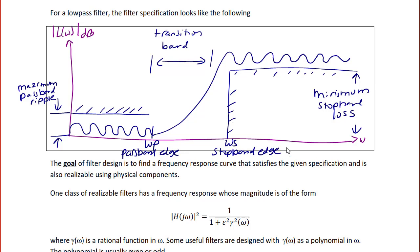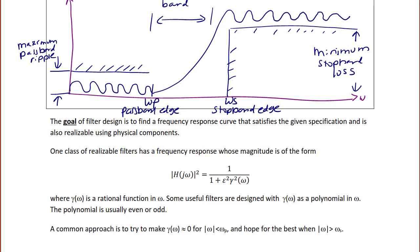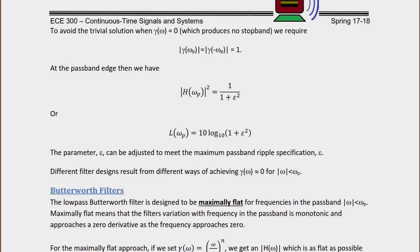The goal of filter design is to find a frequency response curve that satisfies the given specifications and is realizable using physical components. One class of realizable filters has a frequency response of the form |H(jω)|² = 1 / (1 + ε²γ²(ω)), where γ(ω) is a rational function in ω. Some useful filters use γ(ω) as a polynomial in ω, usually even or odd. A common approach is to make γ(ω) approximately 0 for |ω| < ωp, and hope that it meets the design specification for ω > ωs.